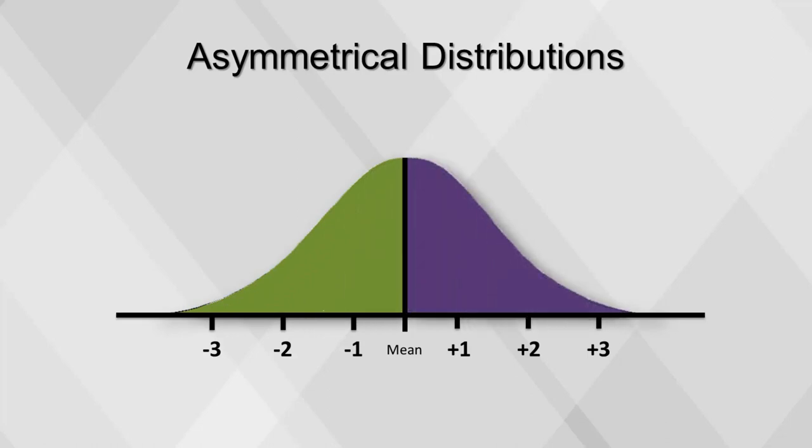Although normal distributions and other types of symmetrical distributions are very common, there are often distributions that are asymmetrical. We call these types of distributions skewed.